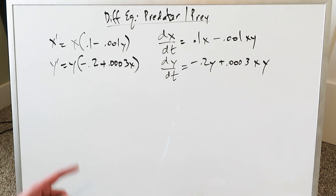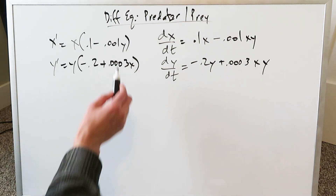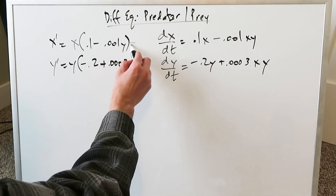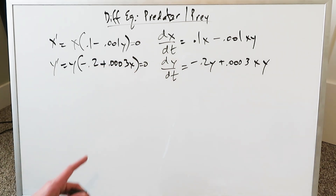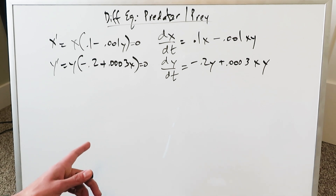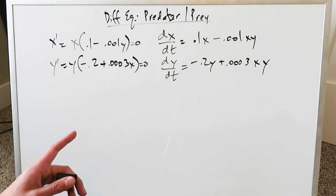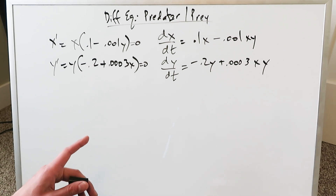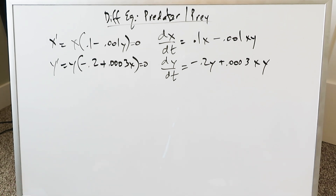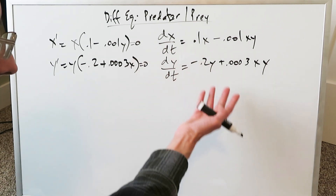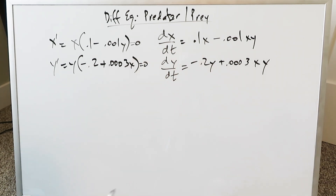In each of these instances, make these equations equal to 0. We're looking at predator-prey systems in terms of differential equations. We don't have a single differential equation here yet, but we will formulate one and we will solve it.